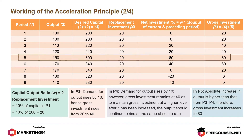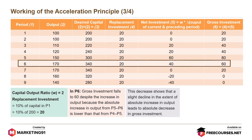In P-5, the absolute increase in output is higher than that from P-3 and P-4; therefore, gross investment increases to 80. In P-6, gross investment falls to 60 despite the increase in output, because the absolute increase in output from P-5 to P-6 is lower than that from P-4 to P-5. This decrease shows that a slight decline in the extent of absolute increase in output leads to an absolute decrease in gross investment.